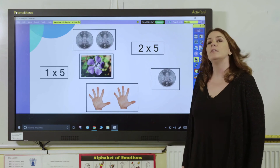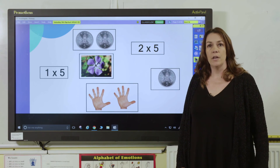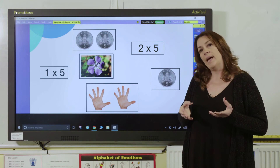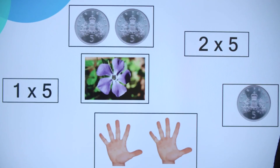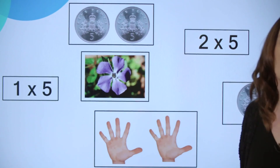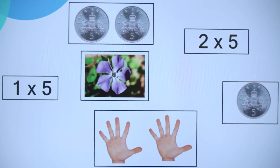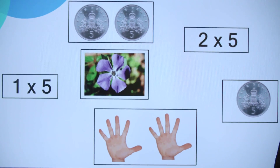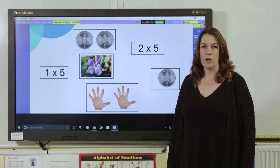Moving on, you can then develop their understanding by using pictures to do matching games or pairs. Pupils might choose to start with the flower that has five petals and match that up to the calculation one times five, or similarly they may match it up to one five-pence coin. So there you go — there are just a few examples of how you can use pictures to teach times tables.